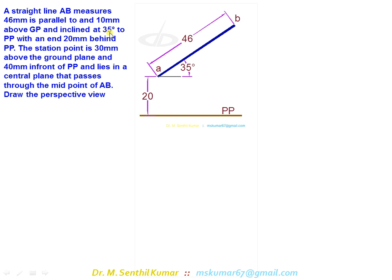With respect to that, draw the top view first. The procedure is: first draw a PP line. With respect to the PP line, draw the top view of the line. The length of the line is 46, its angle is 35 degrees. One end is 20 behind, so from here mark 20 behind. Mark this point as A, one end. With respect to this, draw a 35 degree line on it, set the length of the line 46, and mark this point as B.